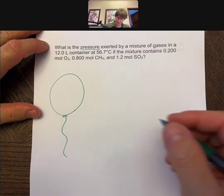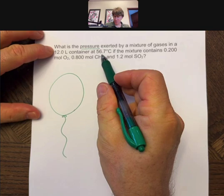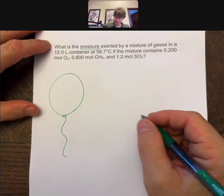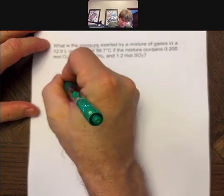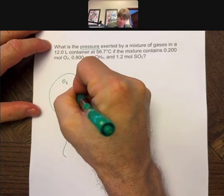Let's presume this balloon has volume of 12 liters, and we're at 56.7 degrees Celsius, and there's moles of O2, there's moles of CH4, and there's moles of SO2 in here.